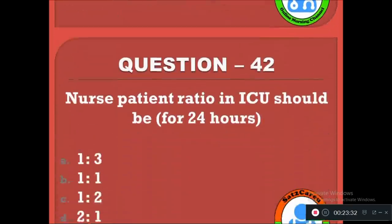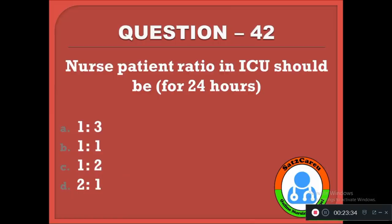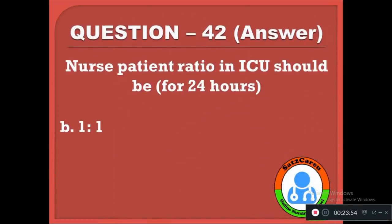Question 42: Nurse-patient ratio in the ICU for 24 hours should be — option A: 1:3, B: 1:1, C: 1:2, D: 2:1. According to the recommendation of WHO and the American Nurses Association, in the ICU for 24 hours, the nurse-patient ratio should be B, 1:1.